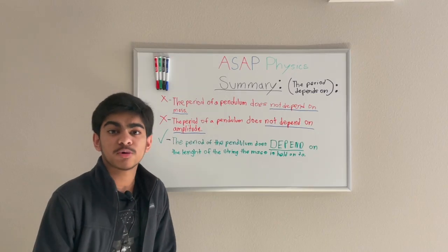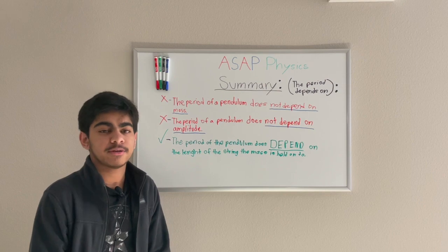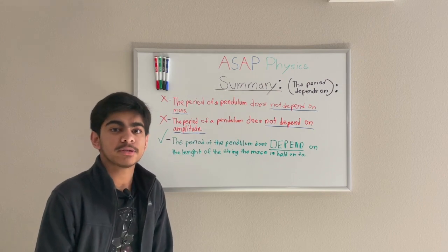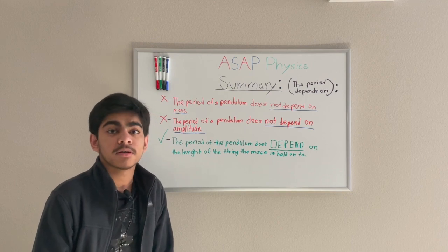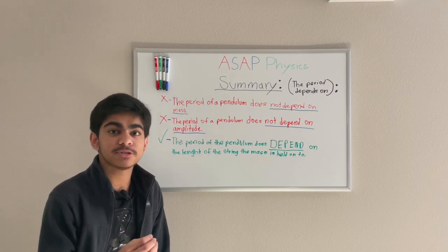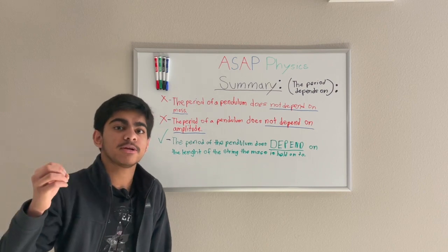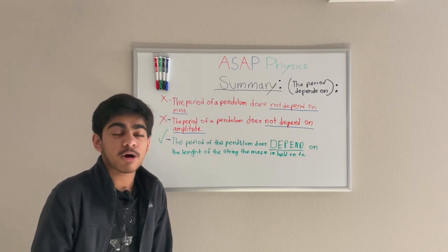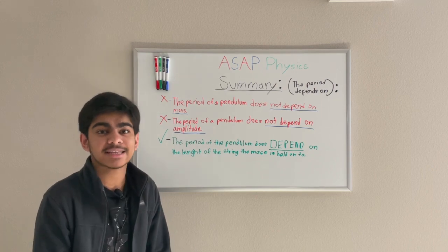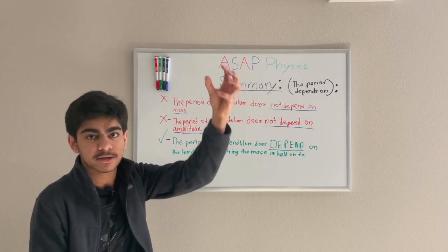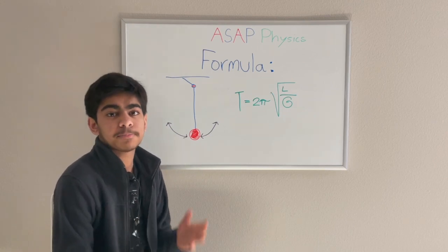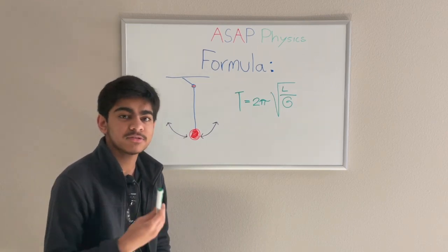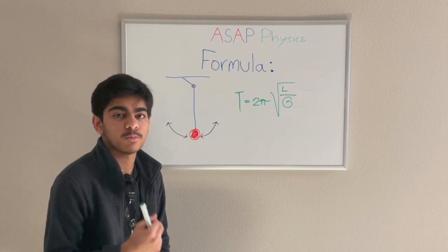Now let's do a quick recap of what we just explained. The period of the pendulum does not depend on the mass of the object it's swinging with. The period of the pendulum also does not depend on the amplitude — basically the release point of the pendulum. However, the pendulum's period does depend on the length of the string that connects the mass to the pivot. The period of the pendulum is the amount of time it takes for the pendulum to complete one full cycle.